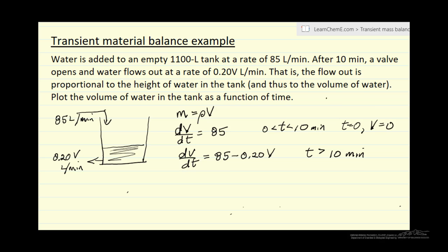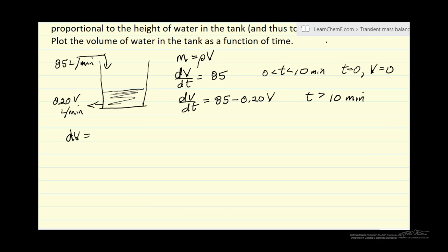So I want to solve these equations. The first one, dV equals 85 dt, which means that volume is equal to 85 times time, since the volume is 0 when t is 0. For the second one, we're going to write it by putting volume terms on the left side and time terms on the right side.